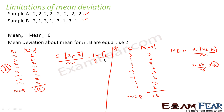So you see that in both cases, the mean is the same, the median is the same, and the mean deviation about mean is also the same. So that means mean deviation about mean is not always sufficient to represent data. So what do we do?